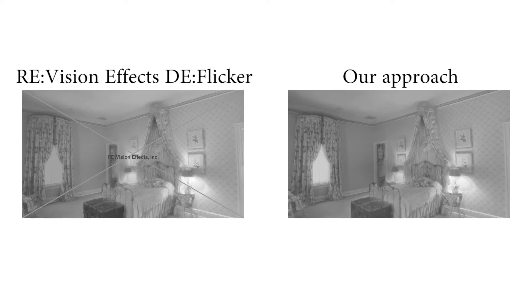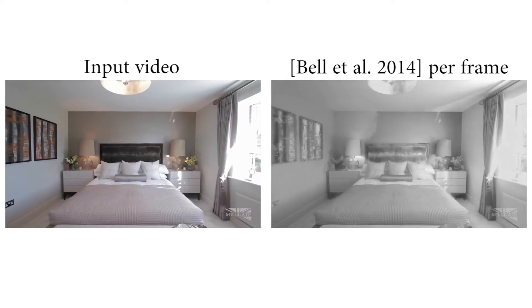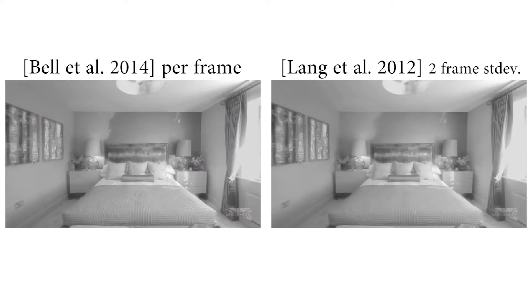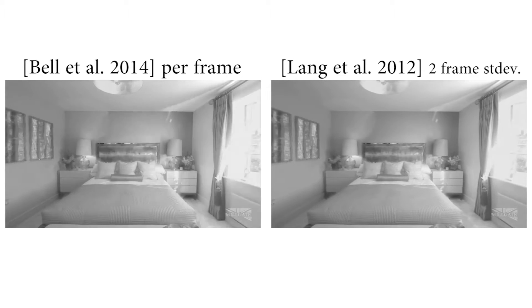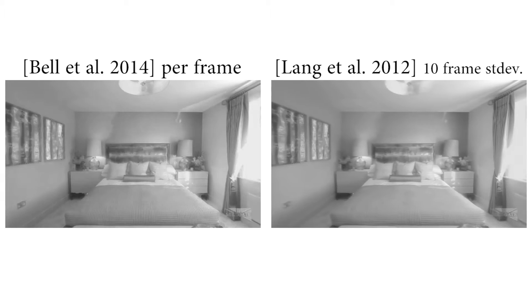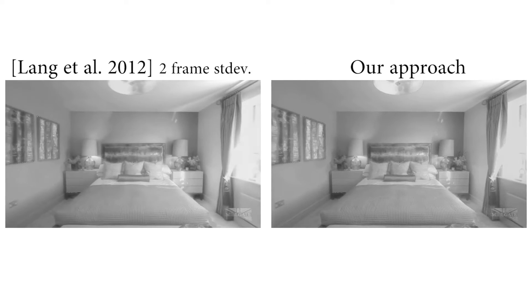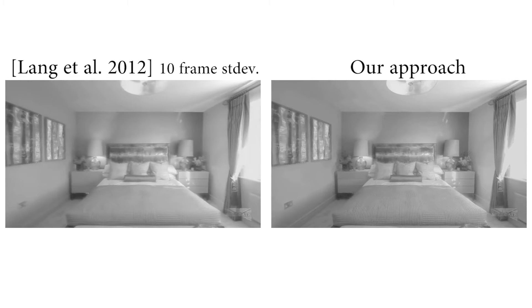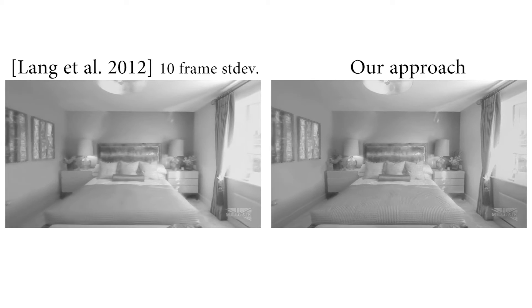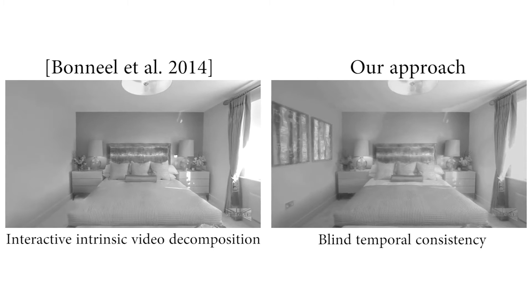We apply the same per-frame technique of Bell to this scene. Existing approaches do well but leave low frequency flicker, and increasing the kernel width only serves to over-smooth. In contrast, our approach successfully removes temporal inconsistency. We are also competitive against specific intrinsic decomposition methods, though this interactive technique uses scribbles to correct the decomposition errors on the left wall.